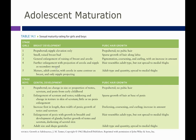For breast development: stage one is pre-pubertal with only nipple elevation; stage two, the nipple becomes a small raised breast bud; stage three, general enlargement and raising of breast and areola; stage four, further enlargement with projection of areola and nipple as a secondary mound; stage five, mature adult contour with the areola in the same contour as breast and only the nipple projecting. For girls' pubic hair: stage one is pre-pubertal with no pubic hair; stage two, sparse growth along the labia; stage three, pigmentation, coarsening, and curling with increased amount; stage four, resembles adult type but not spread to thighs; stage five, adult type and quantity spread to the medial thighs.